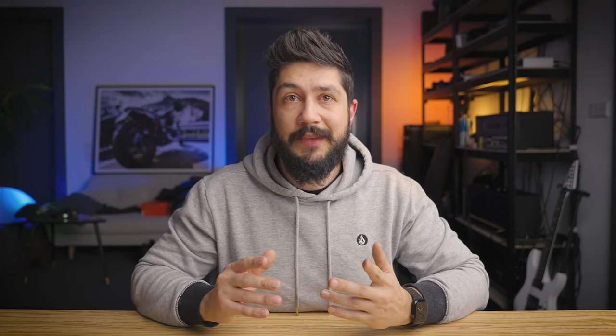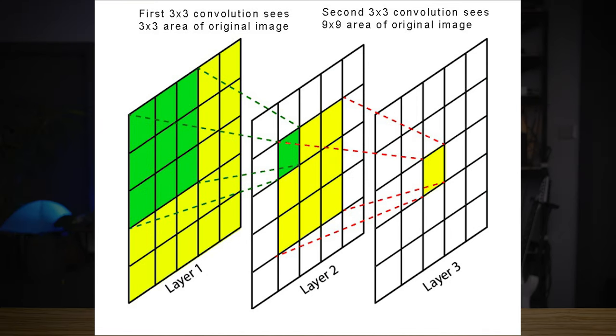So basically the next layer, which might also be a three by three convolution, now does not only see the three by three portion of the original image, but it sees a three by three portion of a condensed image — a condensed version of the original image — which basically covers a wider area of the original image, if that makes any sense.